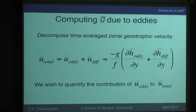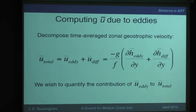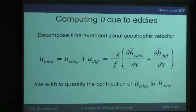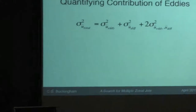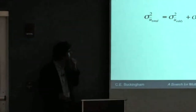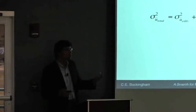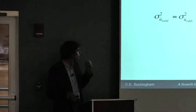I then compute the time-average zonal geostrophic velocity due to the eddies and of the total, and separate them. Because it's linear, you can separate it like this. We wish to quantify the contribution of the eddy term to the total observed — specifically, how much the eddies create the striation pattern — and this is a metric that lets us do that.